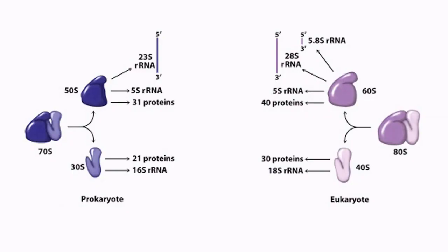Ribosomes are the basic platform where translation occurs. In prokaryotes we have a 70S type of ribosome. This 70S ribosome consists of two subunits: a 50S large subunit and a 30S small subunit. The 50S large subunit consists of 23S rRNA and 5S rRNA, and about 31 different types of protein. In the smaller subunit we have 16S rRNA and about 20 proteins.